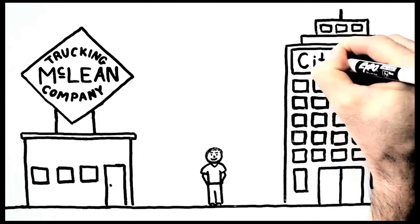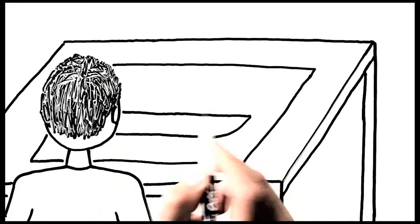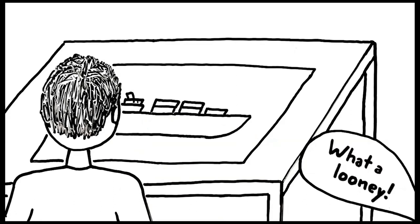He borrowed money from an enterprising vice president at Citibank in New York, and set about designing the steel boxes and the decks of the ships to carry them, stacked one on top of another. A lot of people thought he was crazy.